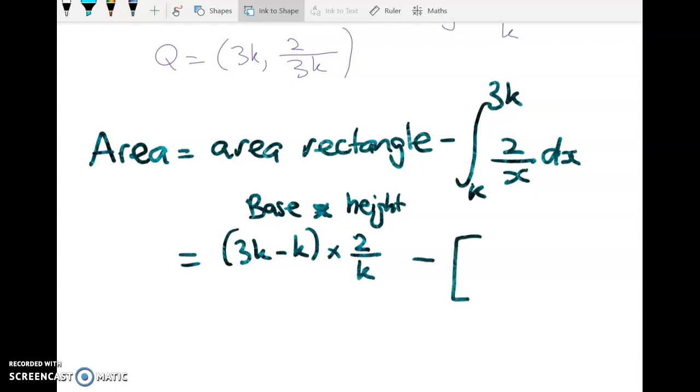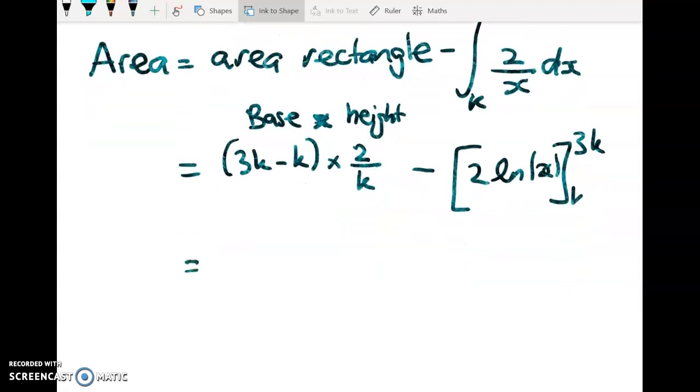And then this integral is going to be 2 times the natural log of the absolute value of x evaluated at 3k and k. So here we're getting 2k times 2 over k minus 2 log of 3k minus 2 log of k.